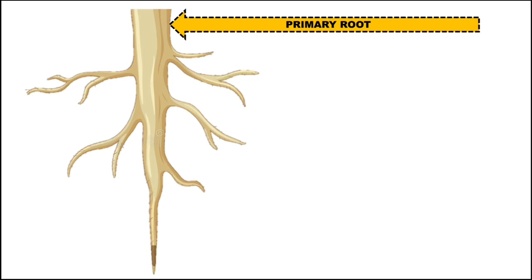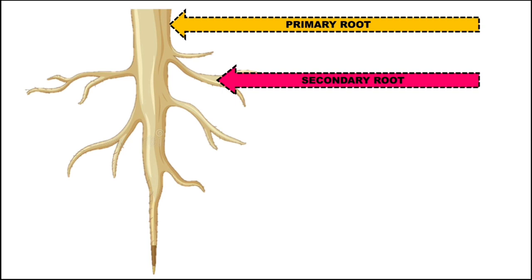These secondary roots grow obliquely and spread far and wide in the soil, supporting the plant. This type of root system is called a tap root. The root bears hair-like structures near the tip, which are called root hairs.